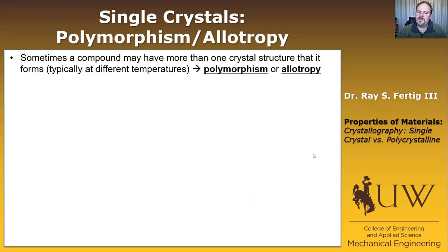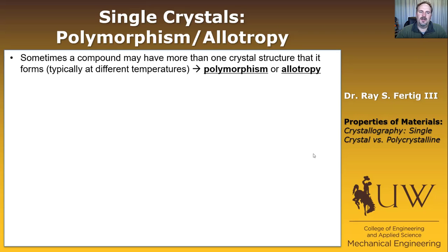Sometimes a compound or element can have more than one crystal structure, which typically happens at different temperatures, but not always. The fact that they have multiple structures is what we call polymorphism or allotropy.